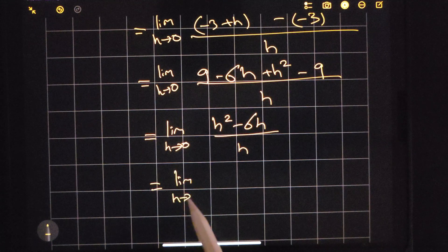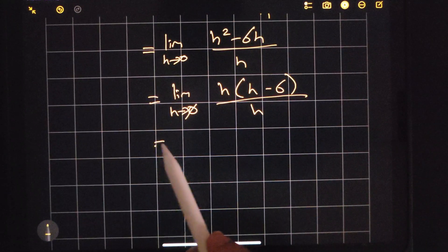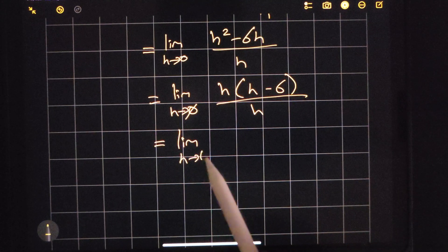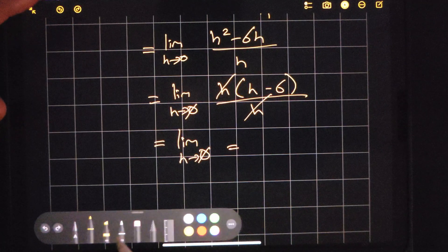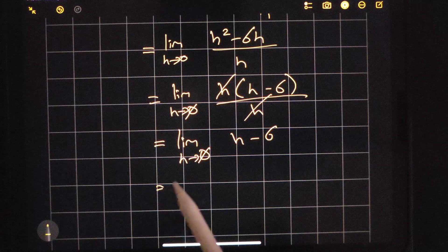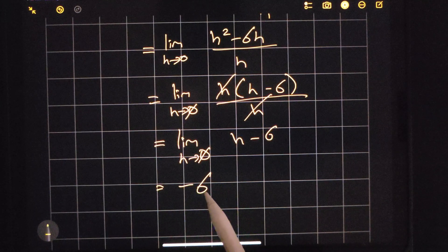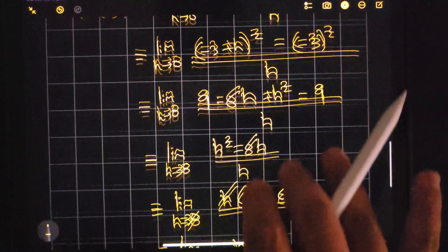So I'll factor out an H from H squared minus 6H over H. Factoring out the H cancels that H out, and I'm left with H minus 6. When I plug the limit in, h goes to 0, and I'm left with negative 6. So the derivative, or instantaneous rate of change, for this function at x equals negative 3 will be negative 6.